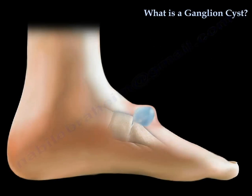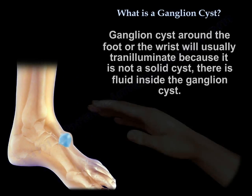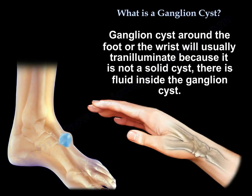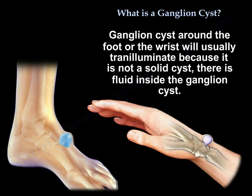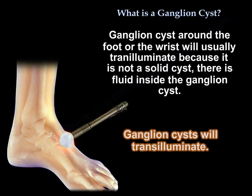A ganglion cyst around the foot or the wrist will usually transilluminate, because it is not a solid cyst — there is fluid inside the ganglion cyst.